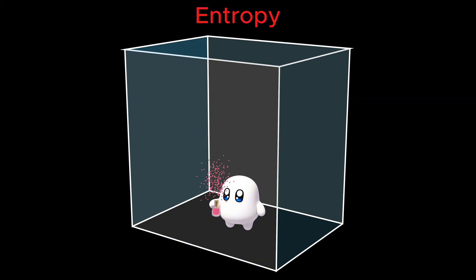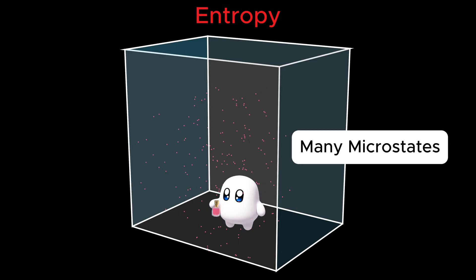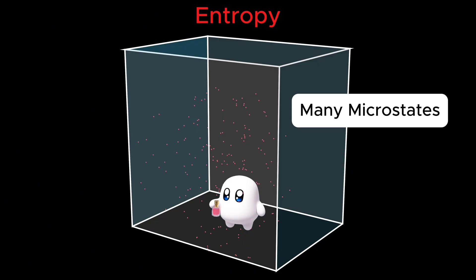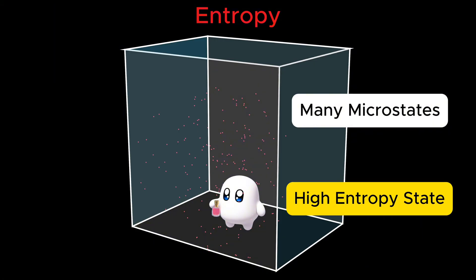As soon as the molecules escape the bottle, they start moving randomly, chaotically, bouncing into air molecules, walls, and each other. They wander outward. They drift in all directions. And as time passes, they fill more and more of the room. After a few minutes, the scent is uniform everywhere. Now there are countless microscopic arrangements of positions of perfume molecules that all look like the whole room smells nice. This is a high-entropy state. When there are many microstates, entropy is high.